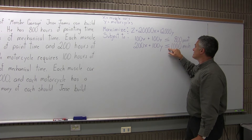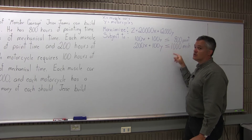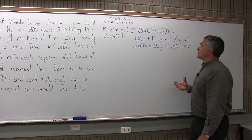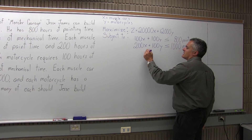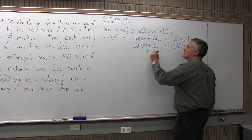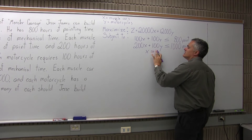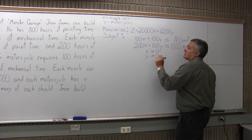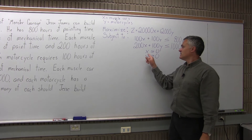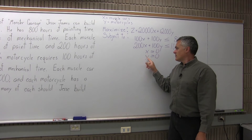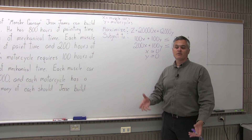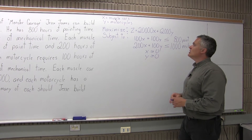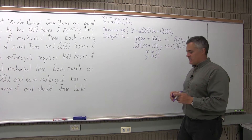You can use all 1,000 hours of mechanical time or a little less — you can't use more than 1,000, you just don't have it. Step three, set up your constraints, we've done that. Step four: for each variable used, it must be specifically mentioned that it is greater than or equal to zero. X greater than or equal to zero means the number of muscle cars produced can be zero or bigger. Y greater than or equal to zero means the number of motorcycles produced must be zero or bigger — you can't make a negative number of anything. Now the problem is set up and it's ready to solve.